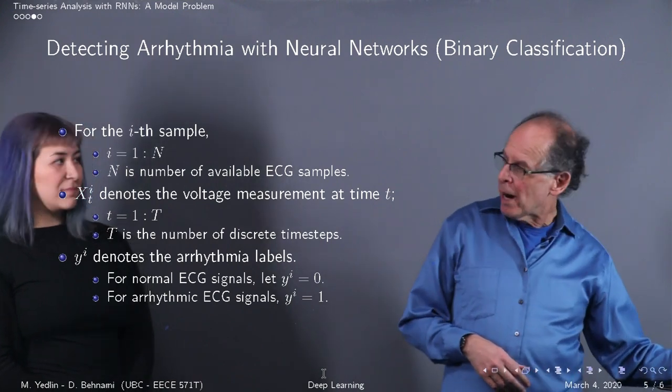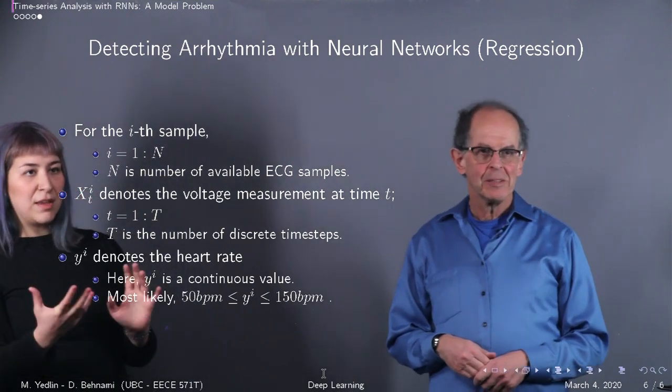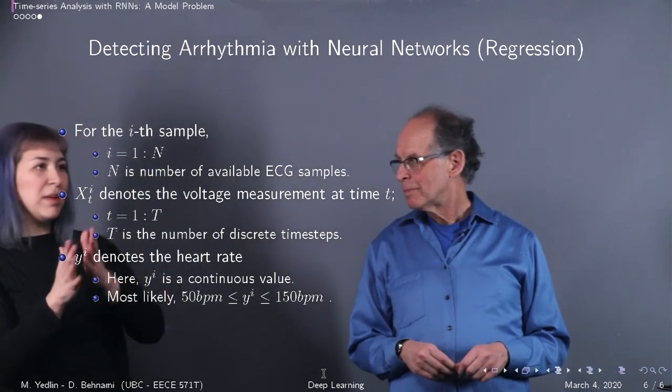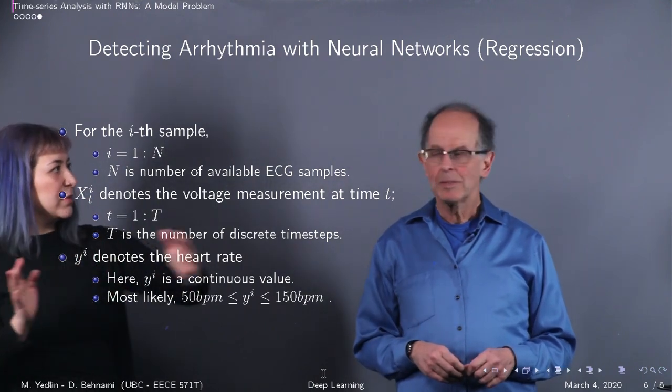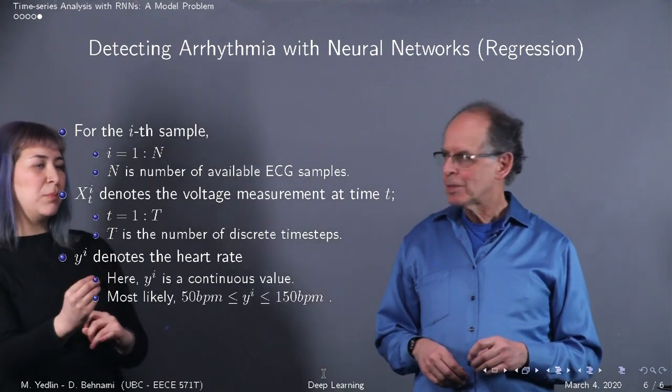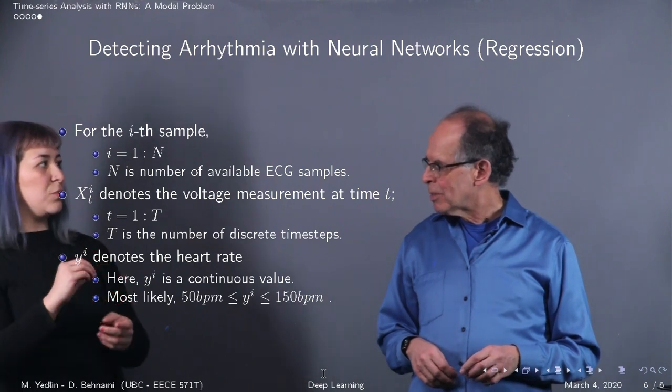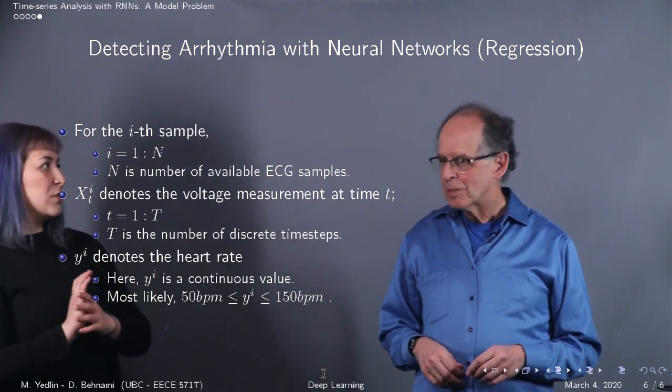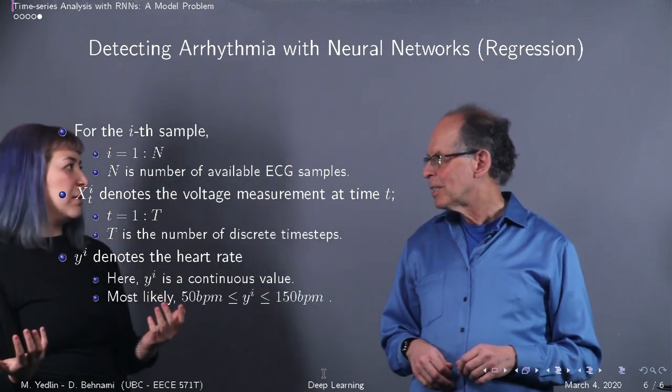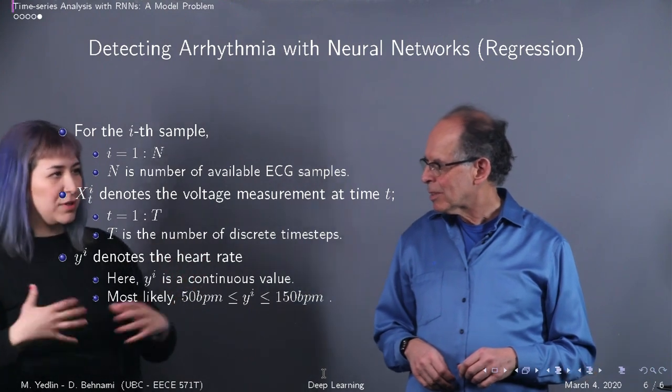So that's binary classification. Let's look at another way to do this. Yeah, so with the same setup, with the same inputs—voltages as a function of time sampled uniformly across the whole input—we can change the output to a continuous variable. Let's say instead of predicting arrhythmia or non-arrhythmic cases, you want to predict the heart rate. So that's a continuous variable and we can imagine it's probably somewhere between 50 beats per minute or 150 beats per minute depending on the state of the patient and their health conditions.